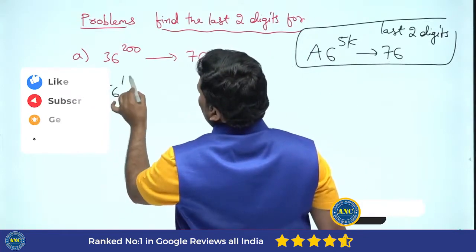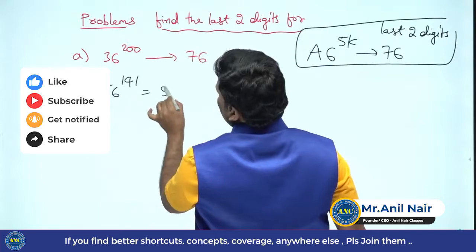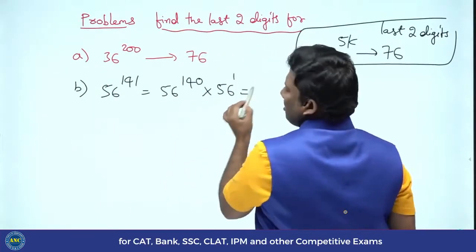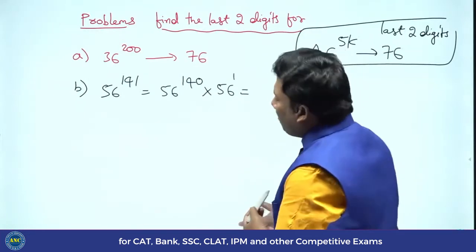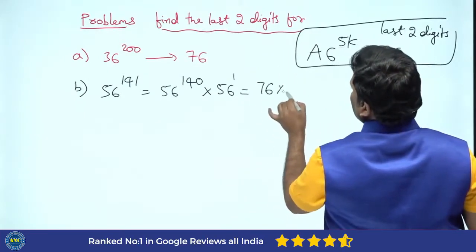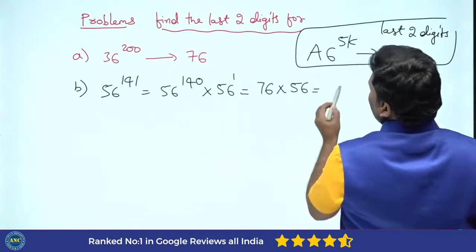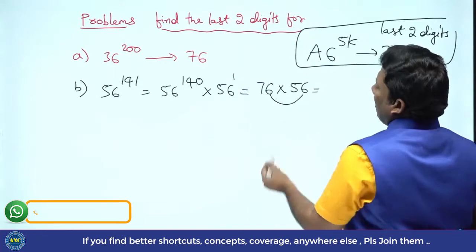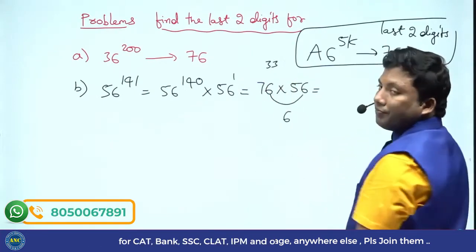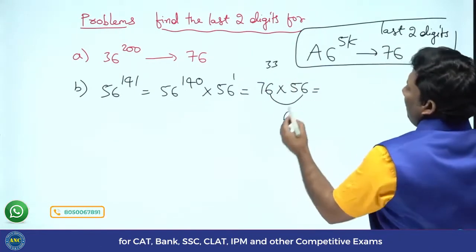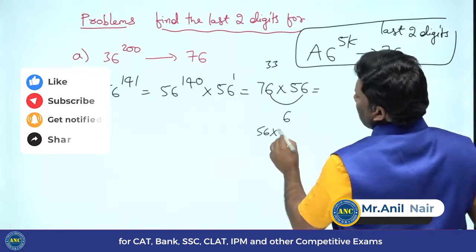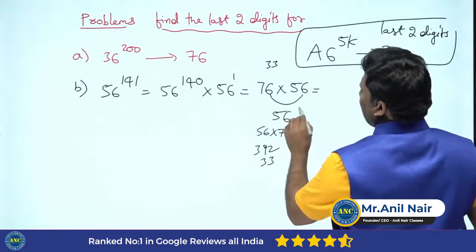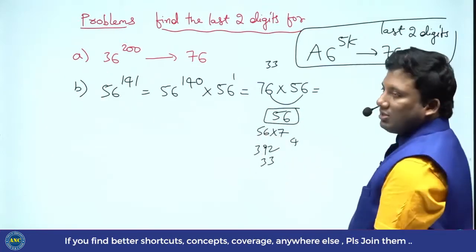56 power 141. This can be written as 56 power 140 into 56. 140 is a multiple of 5, so answer is 76 into 56. 56 times 6 are 36, 33. 56 times 7 are 42, 35, 392, plus 3. Answer is 56.